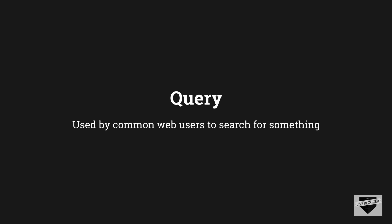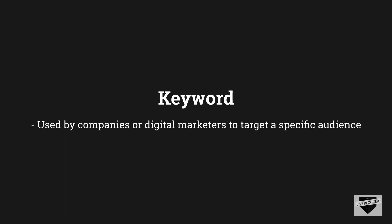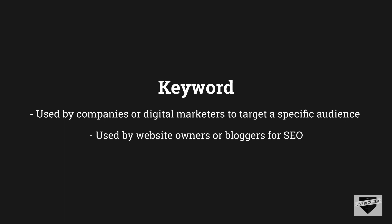Queries are used by visitors to browse around the internet searching for something. Keywords are basically used by companies to target a specific type of audience. A keyword is chosen strategically by the company or a digital marketer so that the person who sees the ads has a high probability of purchasing their service.